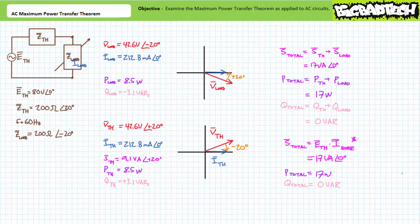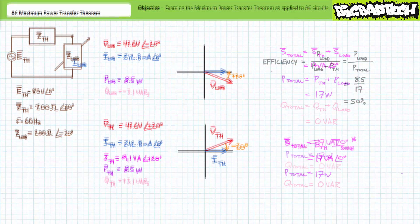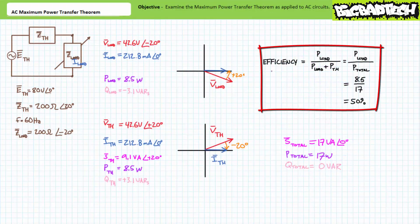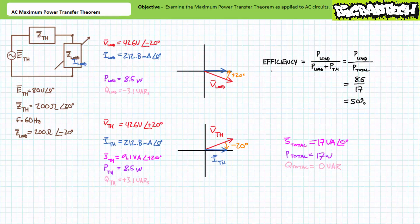Note that at conditions of maximum power, the Thevenin's equivalent voltage source is supplying 17 watts of real power to the whole circuit, yet only 8.5 watts is getting to our load. This is to suggest that maximum power conditions, although representing conditions of peak real power delivery, aren't exactly the most efficient power delivery conditions. At conditions of maximum power, this represents an efficiency of only 50%. Maximum power conditions are as inefficient as efficient conditions are less than powerful.